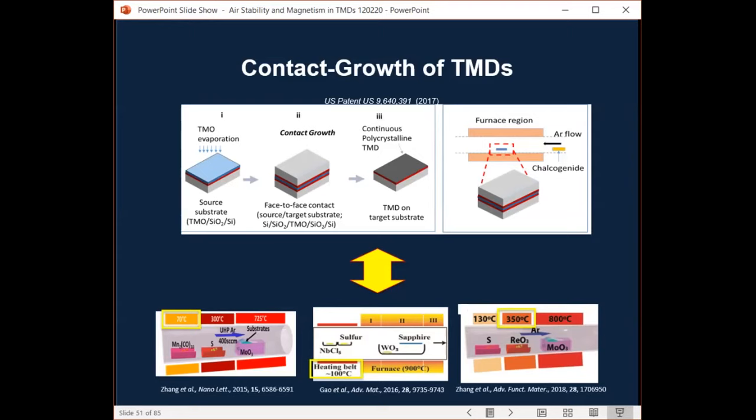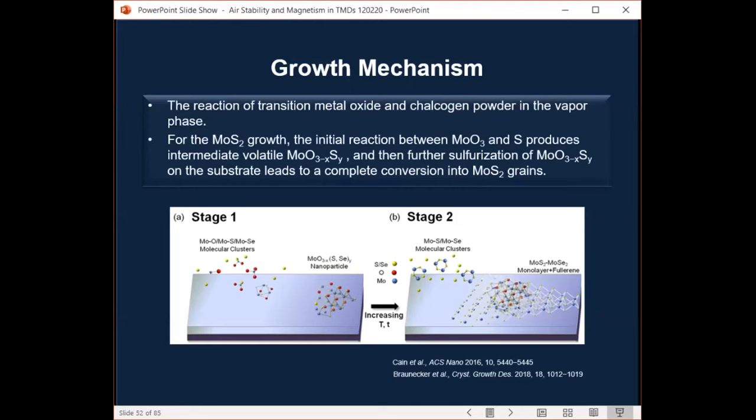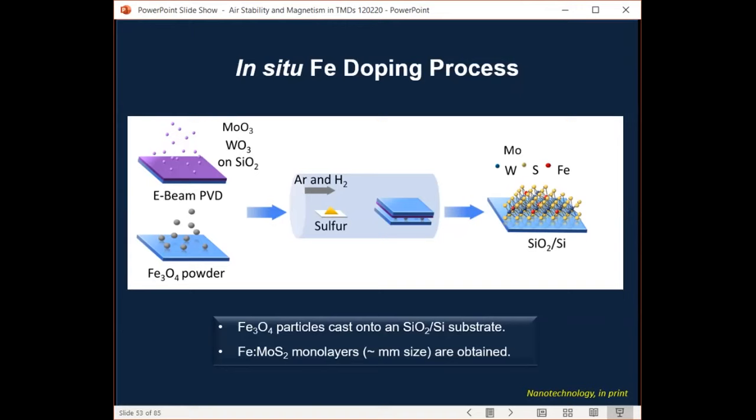So the TMD growth is based on a reaction of transition metal oxide and chalcogen powder in vapor phase. The growth mode is correlated with several parameters, including carrier gas, temperature precursors, and substrate. And we have very little understanding. Also I, my group has done this growth, but I have to confess that we have very little understanding how it works. So we found a couple of papers solely devoted on the mechanism, growth mechanism experimentally. So these, according to these two papers for the molybdenum disulfide growth, the initial reaction between molybdenum trioxide and sulfur produces intermediate volatile suboxide. And then further sulfurization of the suboxide on the substrates leads to a complete conversion into molybdenum disulfide grain. So not much helpful. As for the in-situ iron doping process, all we need to do here is to add iron oxide particles into the process. Well, of course it is easier said than done, to do this as students put in hundreds of hours of their work to obtain the right growth and doping conditions. So, you know, this is hard work.